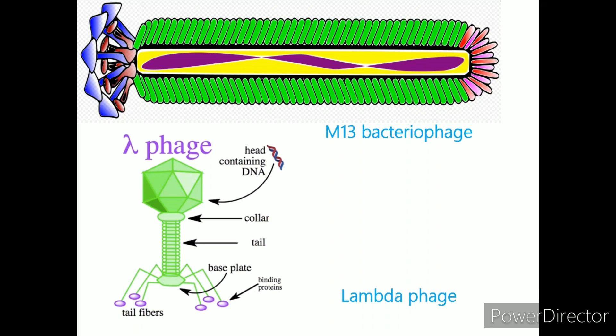Lambda phage, or coli phage, is the bacteriophage that infects bacteria belonging to the bacterial species E. coli. The lambda phage was originally discovered by Esther Lederberg in 1951 in the US during her studies on E. coli under ultraviolet irradiation. Lambda viruses have been studied to understand the lytic and lysogenic life cycles of various viruses and as model viruses for viral studies. The virus has a temperate life cycle that enables it to either enter the lytic phase or reside within the host genome via lysogeny.